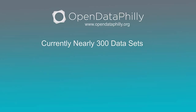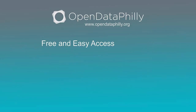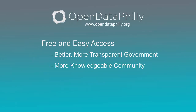There are currently nearly 300 data sets, applications, and APIs related to the Philadelphia region, and these include not only municipal data, but data from universities and commercial and non-profit organizations as well. Open Data Philly is based on the idea that providing free and easy access to data information encourages better and more transparent government, and more engaged and knowledgeable members of the Philadelphia community.